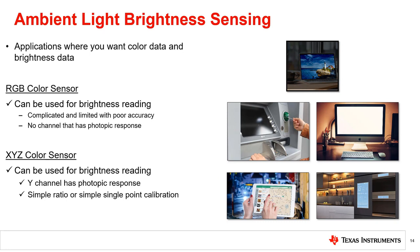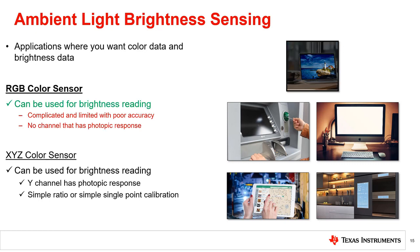In many color sensing applications, the lux value of the light is also desired. This can be used in conjunction with the color value to set the display brightness and color to ensure the best possible user experience. For RGB color sensors, sensing lux is more complicated and limited. Typically, no channel of the RGB color sensor provides a photopic response, so a complicated calibration and matrix is required and will vary in accuracy across the color gamut. With an XYZ color sensor, the Y channel has a photopic response and is linear to lux. The manufacturer of the color sensor usually provides a ratio, or a simple single-point calibration can be used to find the ratio between the Y channel and lux.